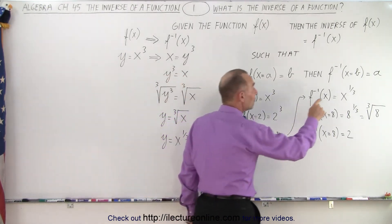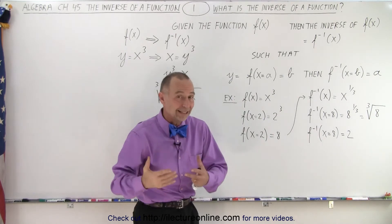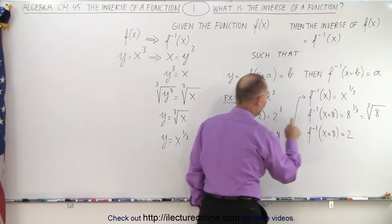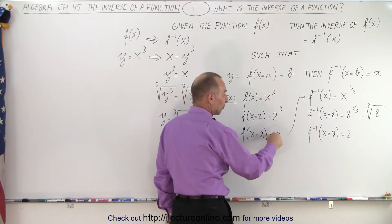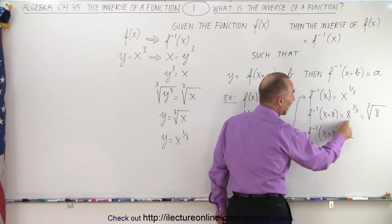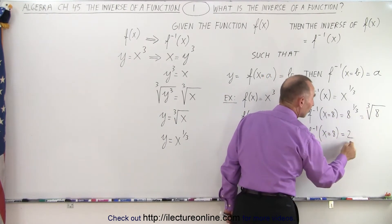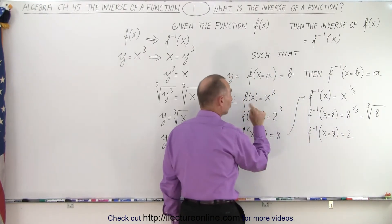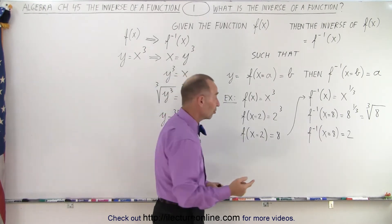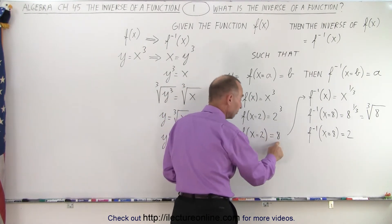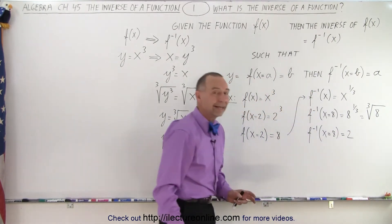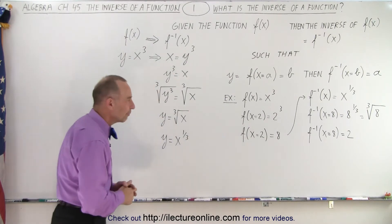Now, here's the inverse of that function. I haven't shown you yet how to get the inverse — that will come. But here's the inverse of the function. We plug in what we ended up with from the original function: when we plugged in 2, we got 8. Now we plug in 8. You can see that 8 to the 1/3 power — which is the cube root of 8 — gives us back 2. It gives us back the original number we plugged in to get the 8. So that's what we mean by an inverse function: you plug in a value, you get 8, then you plug 8 into the inverse function and you get your original number back.